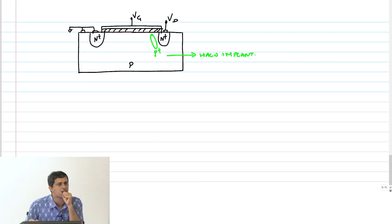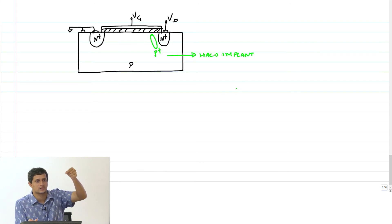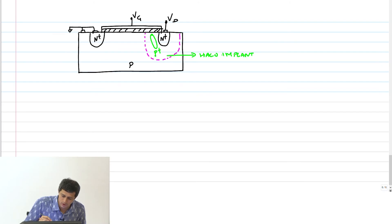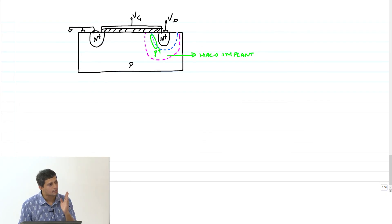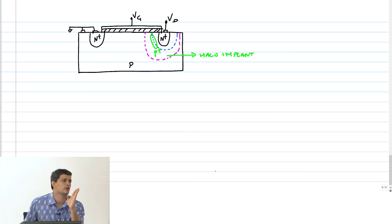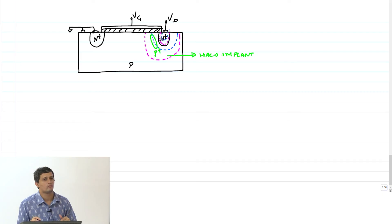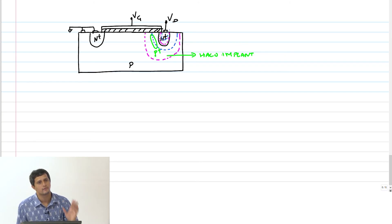The solution is to add what is known as a P+ halo implant near the drain. Now when V_DS is applied, because it is a P+ and N+ junction, the depletion region will penetrate further into the N+ region rather than into the channel. Effectively, the earlier depletion region that extended into the channel now comes down — the P+ is just near the diffusion region. The intuition is: it does not matter if you penetrate into the N+ region; do not penetrate into the channel — that is the idea behind a halo implant.